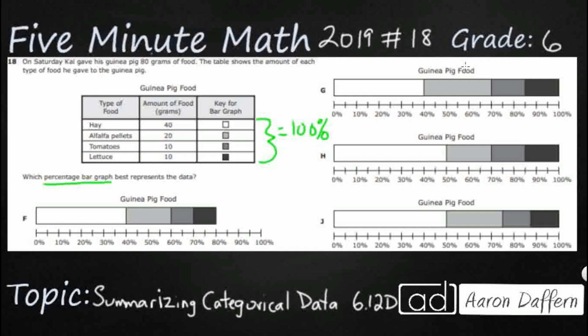Now take a look at all of these white bars right here. These white bars represent the hay because that is what our key says and they already give us this 40 right here.